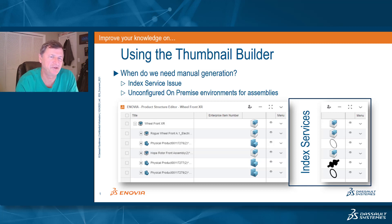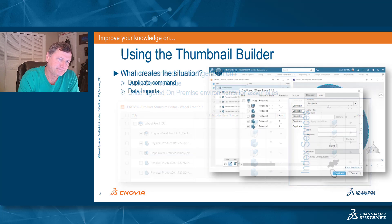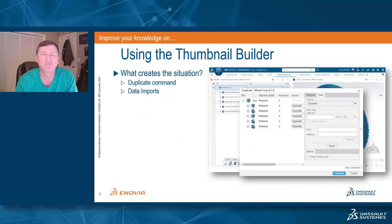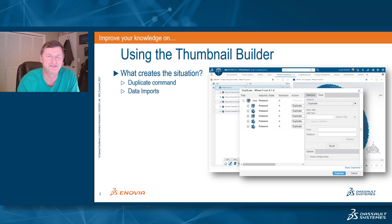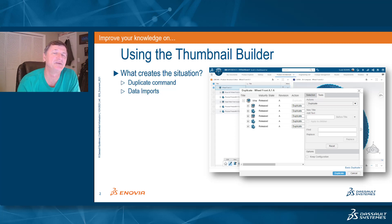I saw this question posted on the community, so I decided to write this tip because I thought it would answer a few questions in this area. What creates the situation? All the CAD integrations on the platform generate thumbnails when the data is saved to the platform. A situation where this doesn't occur is classically with the 3D product architect, which uses a duplicate command to generate derivative structures from previous designs. If you use a duplicate function to create an entirely new product based on a previous one, you're creating that information outside of the CAD environment, so the 2D thumbnails are not created.